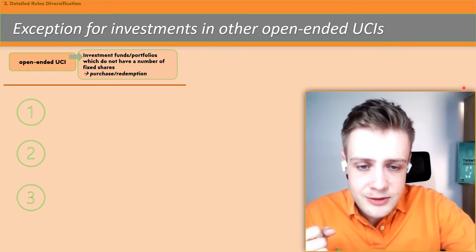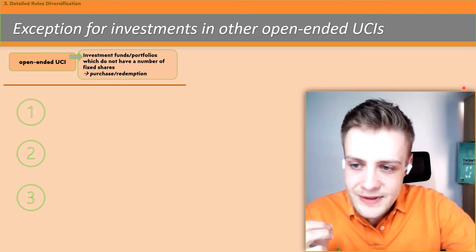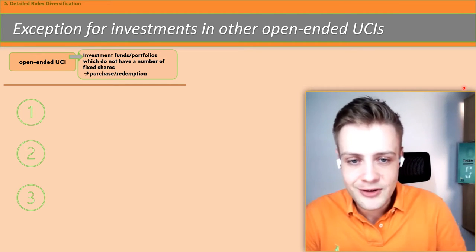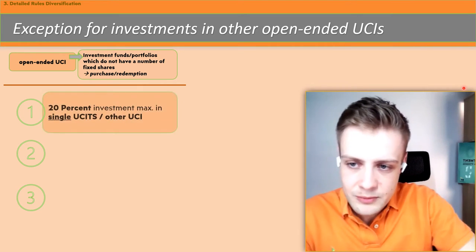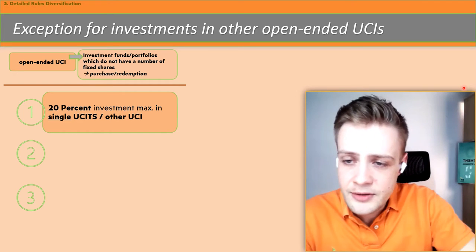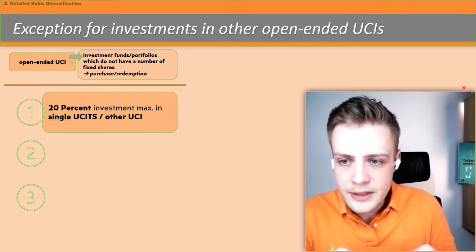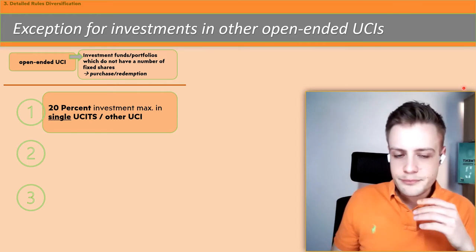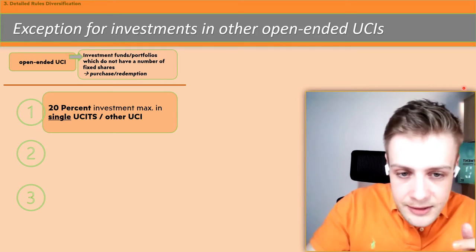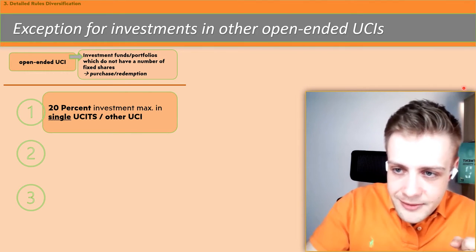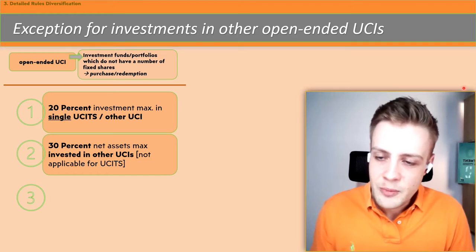Let's actually start talking about the exceptions for other open-ended UCIs. We see three bullet points, meaning there are three exceptions. The nice thing about the first one is it is very simple. It states 20% is the investment maximum in a single UCI or other UCIs. There is nothing worth explaining — it's quite self-explaining.